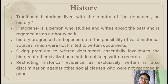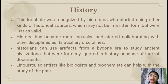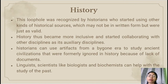Treating historical evidence as exclusively written is also discrimination against other social classes who were not recorded on paper. Halimbawa nito ay ang mga maharlika noong una na may kakayahan silang irehistro ang kanilang kapanganakan, kasal, edukasyon, at maging kamatayan. Subalit, paano ang mga magsasaka at mga katutubo na hindi gaanong napag-isipang mairehistro sa gobyerno? Ay nangangahulugan ba na hindi sila nag-e-exist sa mundo o wala silang kasaysayan dahil sa kawalan ng dokumento? This loophole was recognized by historians who started using other kinds of historical sources — oral traditions in the form of epics and songs, artifacts, architecture, and memory.